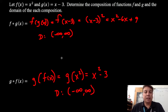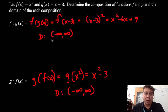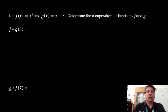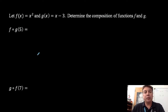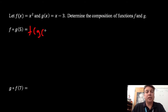So again, just making sure we understand the idea of composite functions — I'm literally taking whatever a function is and dropping it into another function to get a resulting function. Let's take a look at this next one. Let f of x equal x squared, g of x is x minus 3 again. Determine the composition of f and g — so I'm going to take the value and substitute it in. I'm doing f of g of 5.